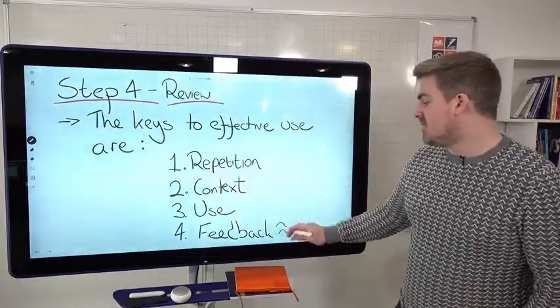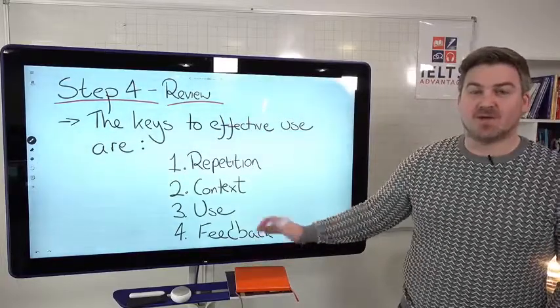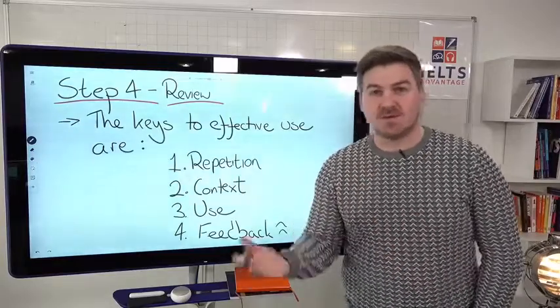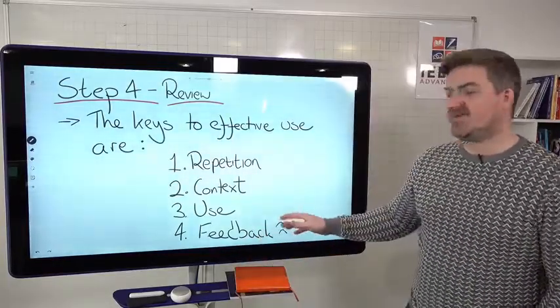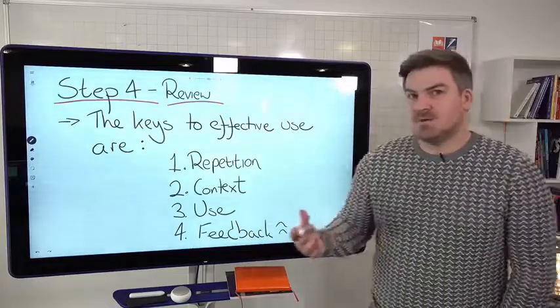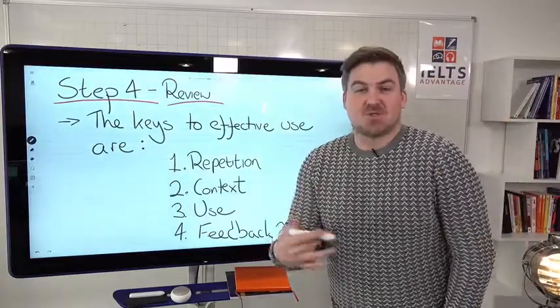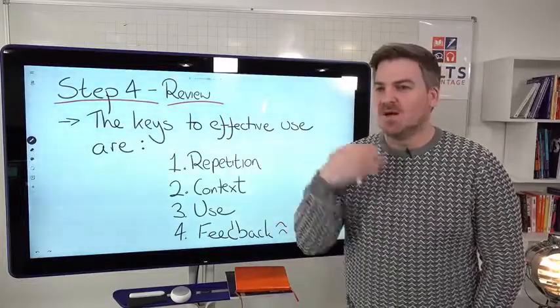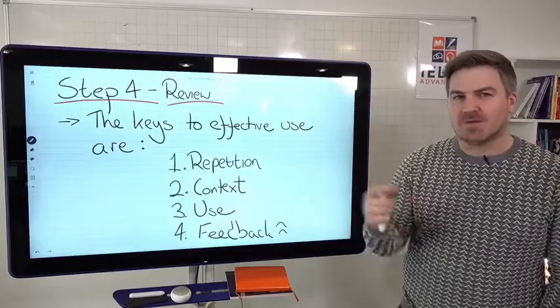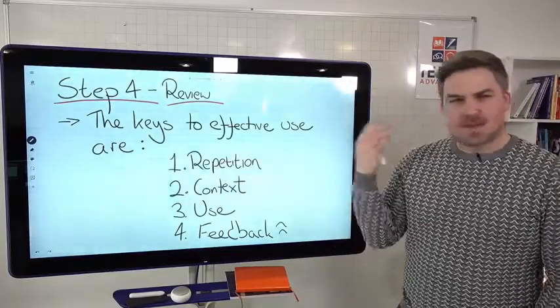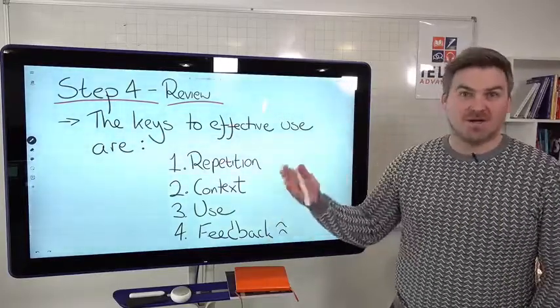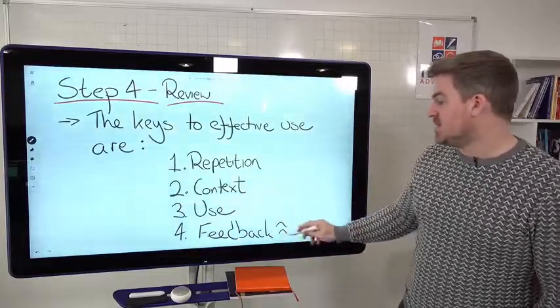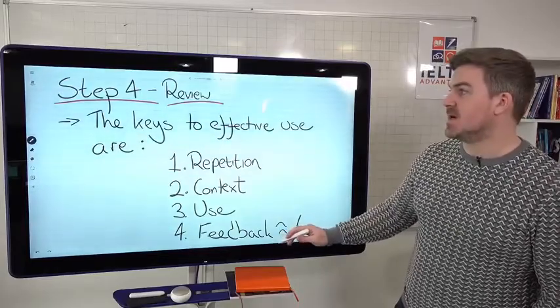This is an optional step, but a very, very important step, which is get feedback on your use of those words. Are the collocations correct? Is your use correct? Is the grammar correct? And that feedback is really going to help you. You can get feedback just yourself by writing an essay and trying to use as many of those words as you can, or recording yourself speaking and then checking the grammar and the vocabulary. Or you can get a teacher or a native English speaker or a very high level English learner to help you with that. But that is really the thing that is going to make the most difference, getting the feedback that you need.